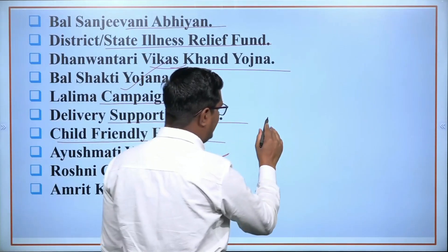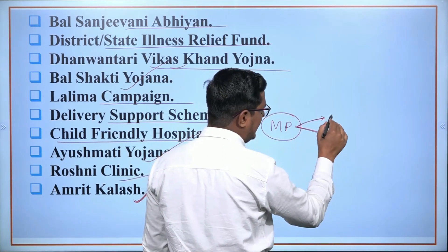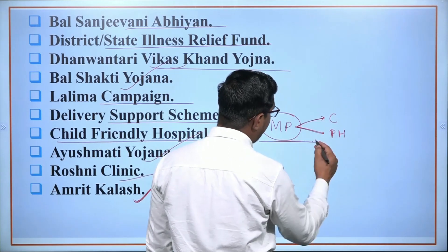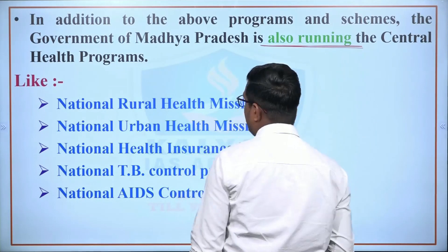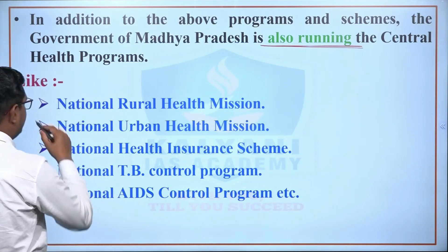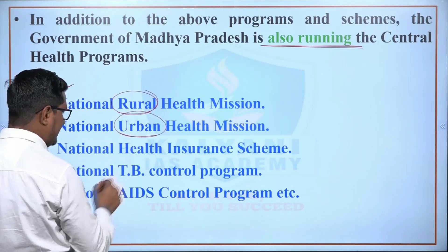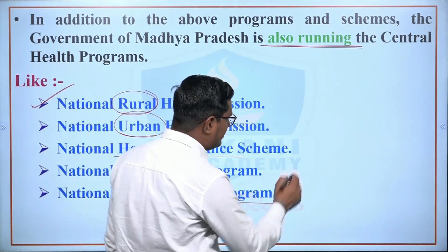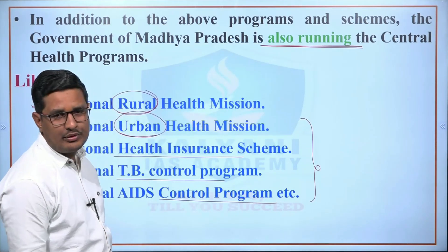These are all health programs launched or implemented by the Madhya Pradesh government, classified into curative and preventive health programs. Additionally, some programs are being run in Madhya Pradesh whose policy formulation was done by the central government — national health programs. For example: National Rural Health Mission, National Urban Health Mission, National Health Insurance Scheme, National Tuberculosis Control Program, and National AIDS Control Program, which we studied in detail in the previous lecture.